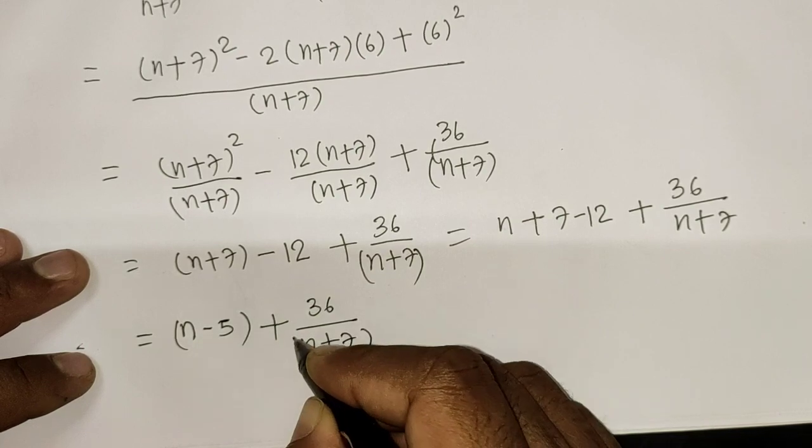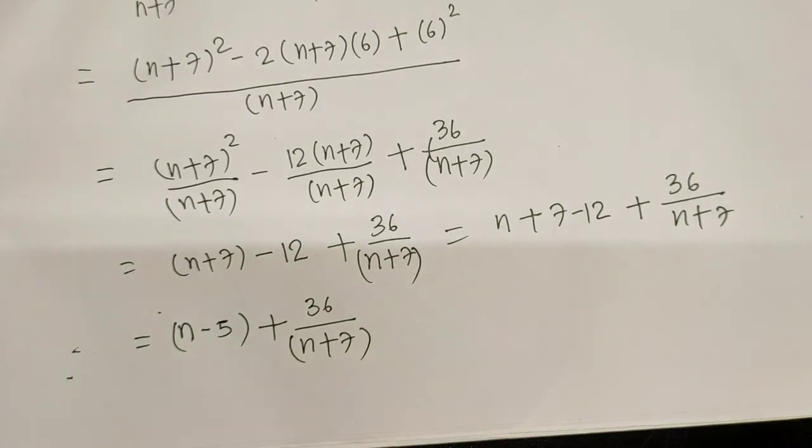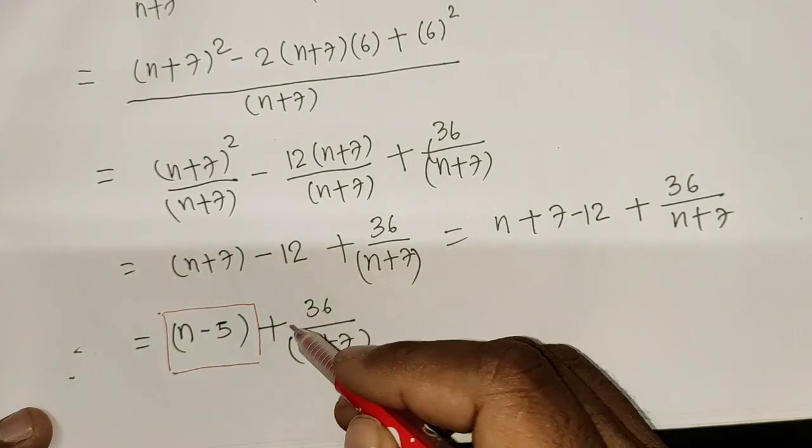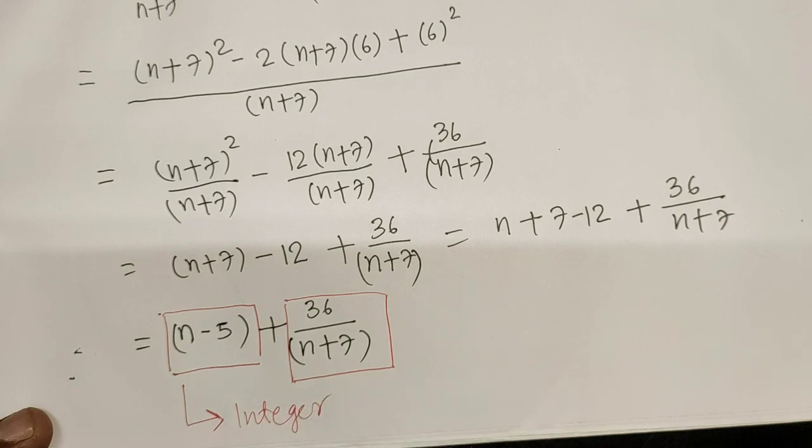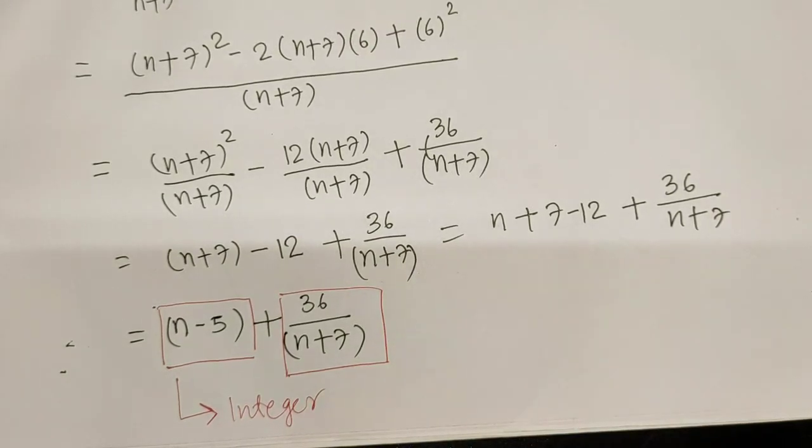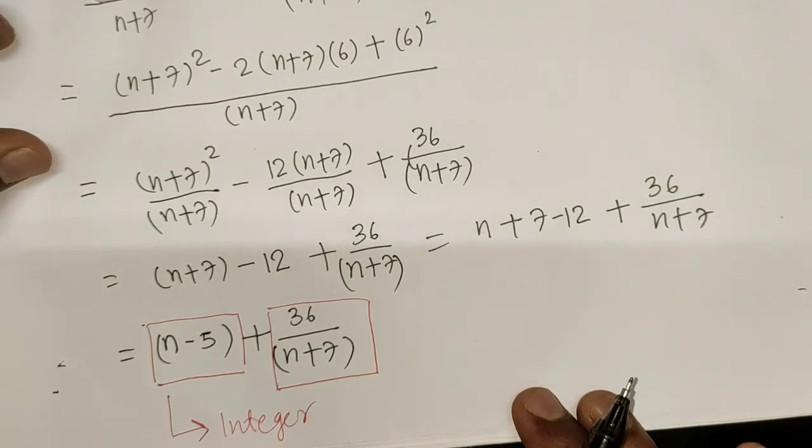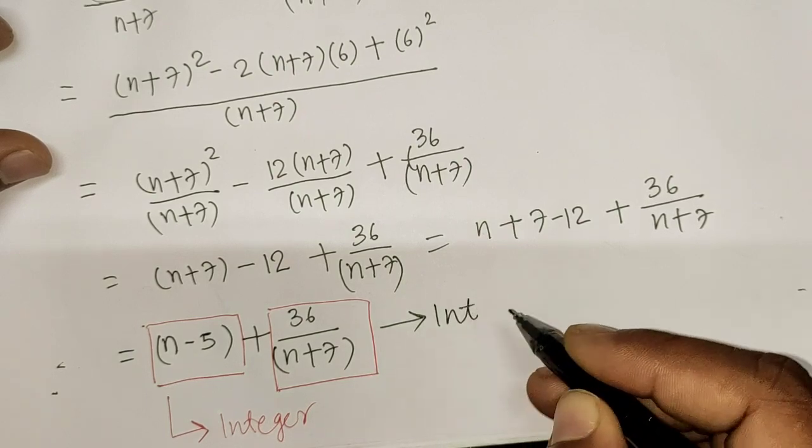Clearly this expression has two parts. This is my first part and this is my second part. Clearly no matter for any integer value this is an integer, but in order for the second part to be an integer, we have to specify the value of n. That is, (n+7) must be a factor of 36.